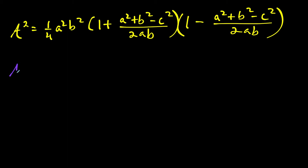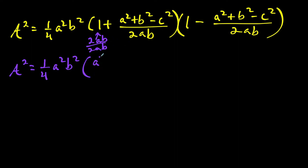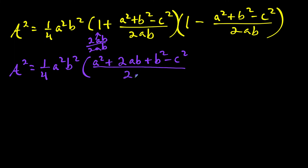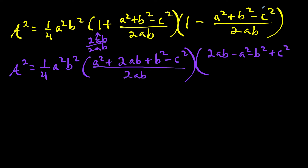So for the next line, we have a little algebra to do. We have area squared equals one fourth times A squared times B squared. I'm going to replace the '1' with two AB over two AB, so when we add the fractions, the first bracket becomes (A squared plus two AB plus B squared minus C squared) over two AB. And for the second bracket, two AB minus (A squared plus B squared minus C squared) over two AB gives (two AB minus A squared minus B squared plus C squared) over two AB — being careful to distribute the minus sign.